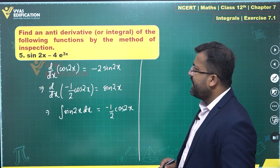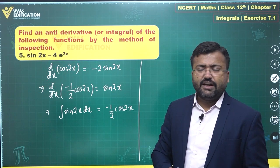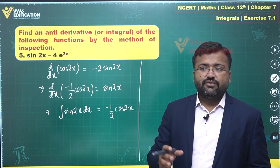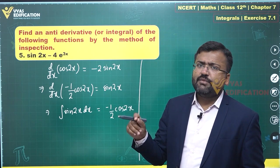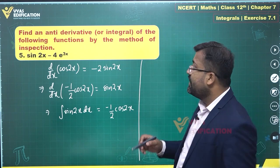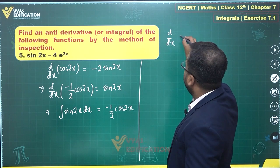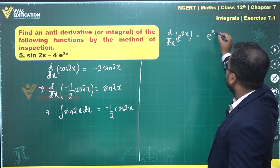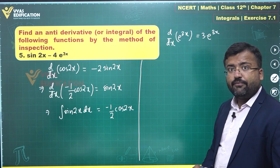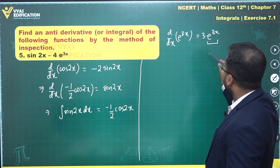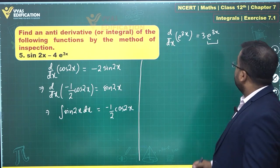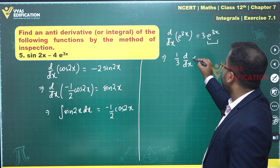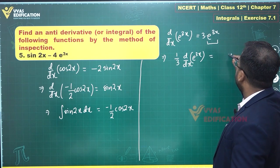For the other part, we have minus 4 e^(3x). We are interested in e^(3x). The integral of e^(3x) requires us to think: e^(3x) can be obtained by taking the derivative of e^(3x). So d/dx of e^(3x) equals 3e^(3x), which means (1/3) d/dx of e^(3x) equals e^(3x).